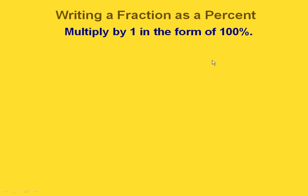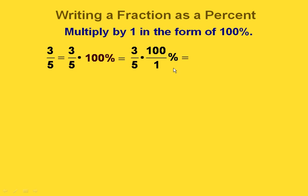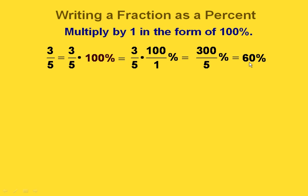Now, what if we want to write a fraction as a percent? Again, we're just going to multiply by 100%. So if we start out with 3 fifths, then we're multiplying 3 fifths times 100%, which is the same as 100 over 1, and then we multiply straight across. If we divide 300 by 5, we get 60, so this would be the same as 60%.